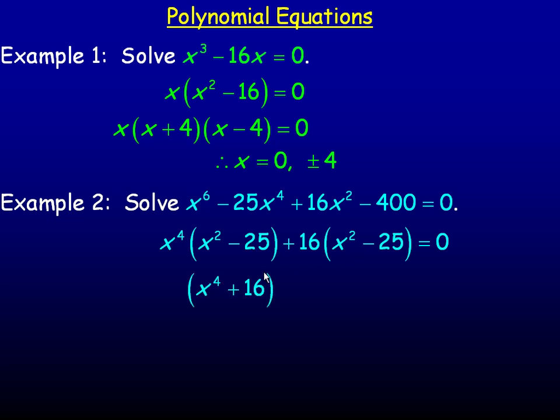So our two factors are x to the fourth plus 16 and x squared minus 25. Now, setting each of these equal to 0, because this multiplied by this equals 0, we have either x to the fourth plus 16 equals 0 or x squared minus 25 equals 0.